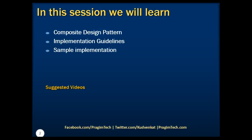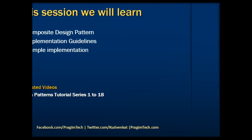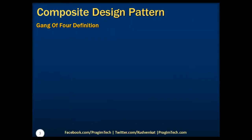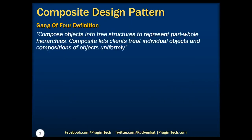Please refer to the previous parts of the tutorial before proceeding. As per the Gang of 4 definition, composite pattern states that we need to compose objects into tree structures to represent part-whole hierarchies. Composite lets clients treat individual objects and composition of the objects uniformly.